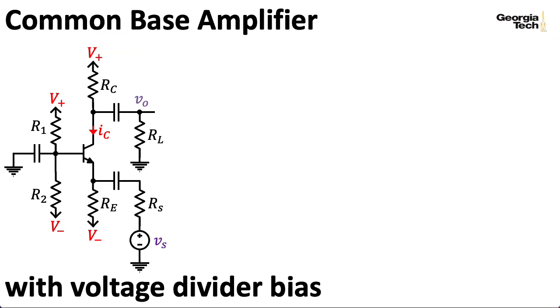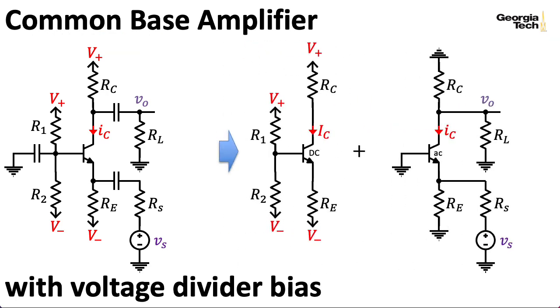As usual, we decompose our amplifier into a DC bias circuit and a small signal, aka AC circuit. And for the DC circuit, we open up all of the capacitors, so we basically take these out. And for the small signal circuit, for now we're going to assume that the capacitors are acting as shorts. And later in the class, I'll show you more delicate ways of dealing with the capacitors that will allow us to explore their effect on the frequency response.